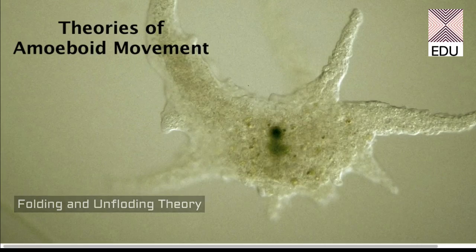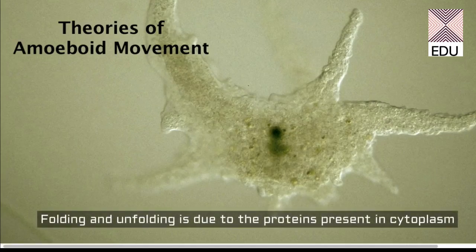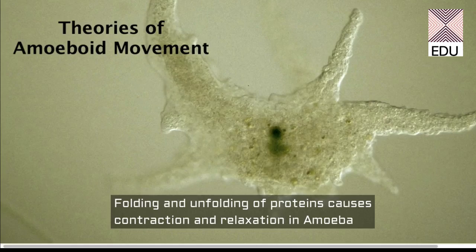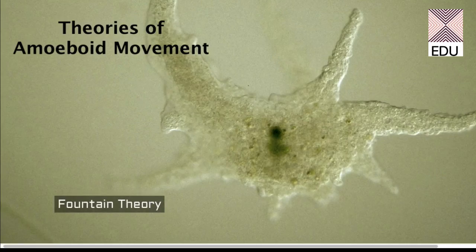Next is the folding and unfolding theory, which explains that the whole amoeba first folds on itself, and when it unfolds it is stretched to some extent. That unfolded state helps the amoeba to move a certain distance, though that distance is very small.